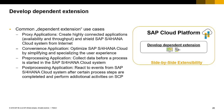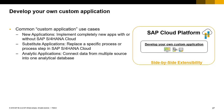Common use cases for side-by-side extensibility include proxy applications, which are highly connected applications shielded from the S/4HANA Cloud system from the Internet. Also convenience applications, which optimize or simplify an existing user experience for an organization. Pre-processing applications collect data before it's processed by the S/4HANA Cloud system. Post-processing applications react to events from SAP S/4HANA Cloud and provide additional services on SAP Cloud Platform. Other use cases include creating new applications for S/4HANA Cloud, substitute applications that replace a specific process or step, and analytical applications connecting multiple data sources into one analytical database.